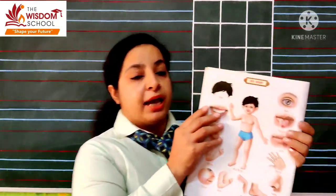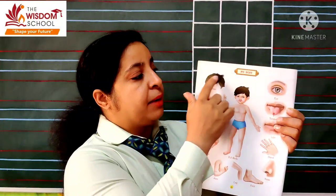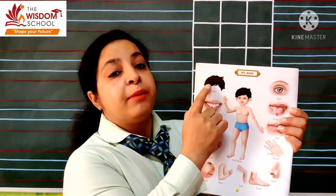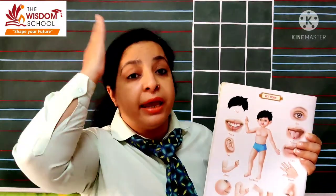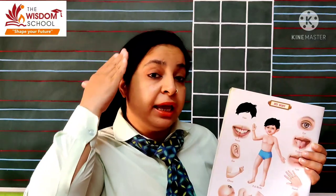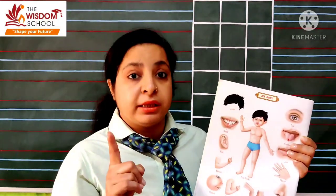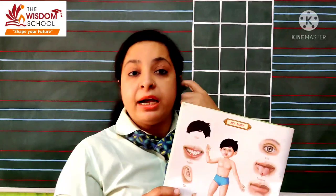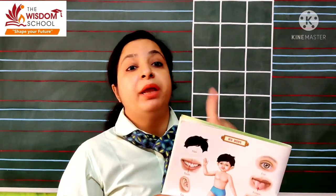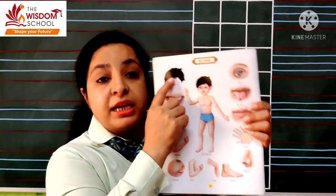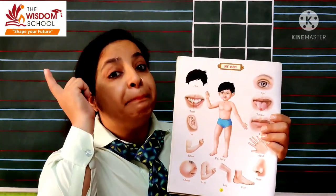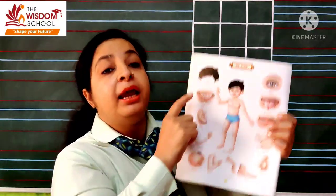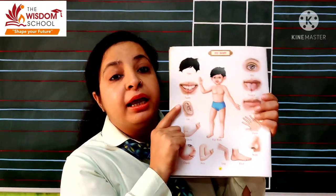Toh dhyan se dekhna. Yee jo parts hain, dekho yeh kya hai? Yeh bolte hain isko hair. Yeh ma'am ke hair hain na, yeh baal hain. Jisko yeh baal hote hain, aapke bhi hain na? Hum kadte hain inhe, hum combing karte hain in baalon pe. Toh yeh hote hain hamari hair. Kis color ki hoti hain? Black color ki. Toh black color ki yeh kya hai? Hamari hair.